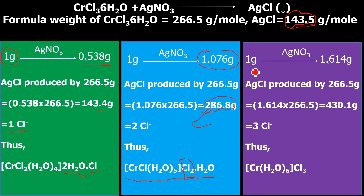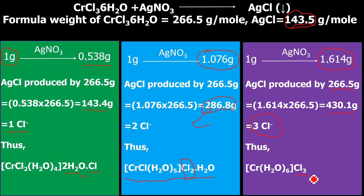For the violet coloured isomer, 1 gram treated with aqueous AgNO₃ gives 1.614 grams of AgCl. For 266.5 grams, this equals 430.1 grams, indicating the presence of 3 Cl⁻ ions outside the square bracket satisfying the primary valency of chromium +3. This is how, using simple concepts of inorganic qualitative and quantitative analysis, we can establish the formulas of the three isomers of CrCl₃·6H₂O.